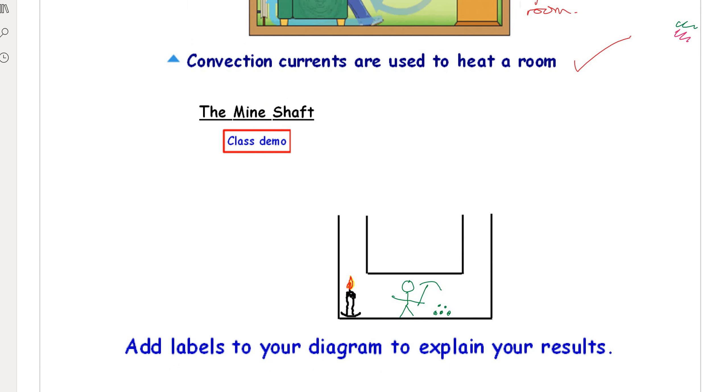Okay, let's move on. The next one is called the mine shaft demonstration. Now you can see a miner is here at the bottom of the shaft and he's got all these lumps of coal there. I've got a fire. Now you might think, well, you've got a fire that's going to use up oxygen, so he's going to suffer.